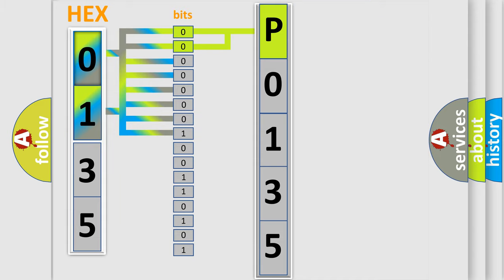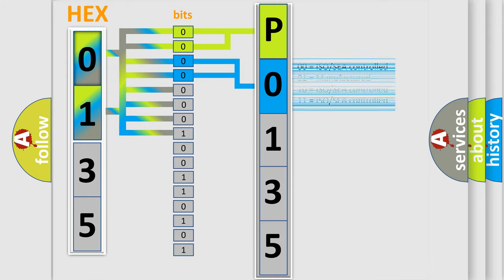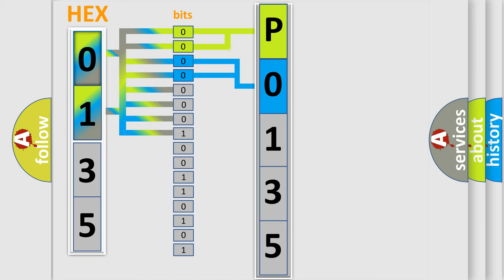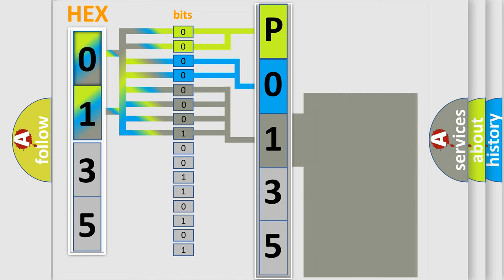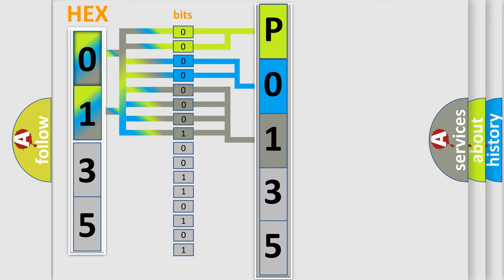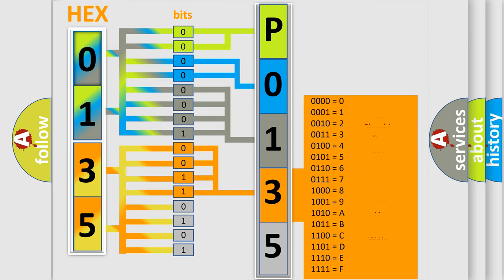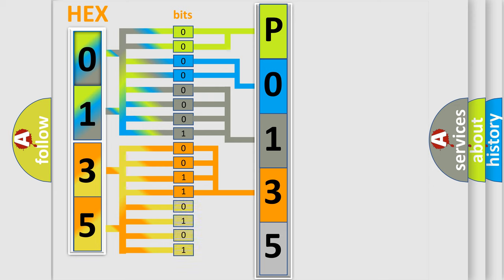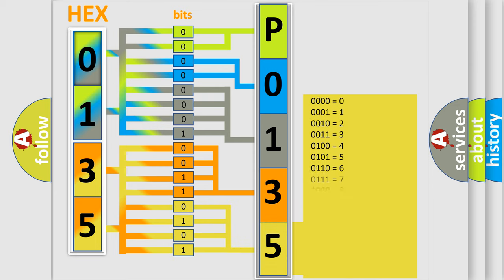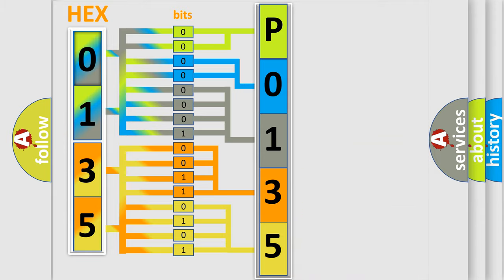The next two bits determine the second character. The last four bits of the first byte define the third character of the code. The second byte is composed of a combination of eight bits. The first four bits determine the fourth character, and the combination of the last four bits defines the fifth character. A single byte conceals 256 possible combinations.